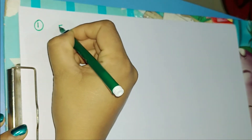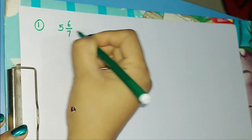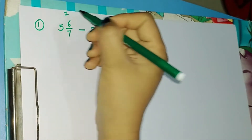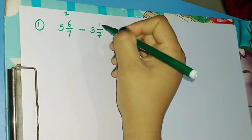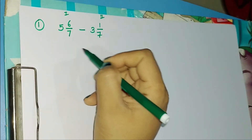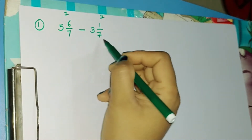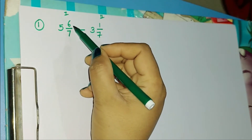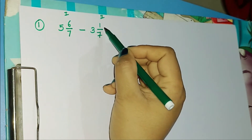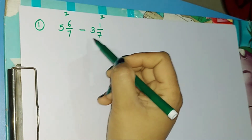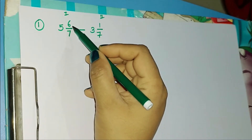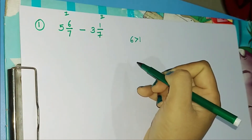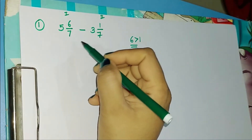Our first question is 5 6/7 minus 3 1/7. Let's take this as fraction number 1 and the second fraction as number 2. Here in both fractions you can see that the denominator of both fractions is the same, that is 7. Next we need to check whether the numerator of the first fraction is greater than the numerator of the second fraction. Here the numerator of the first fraction, that is 6, is greater than the numerator of the second fraction, that is 1.